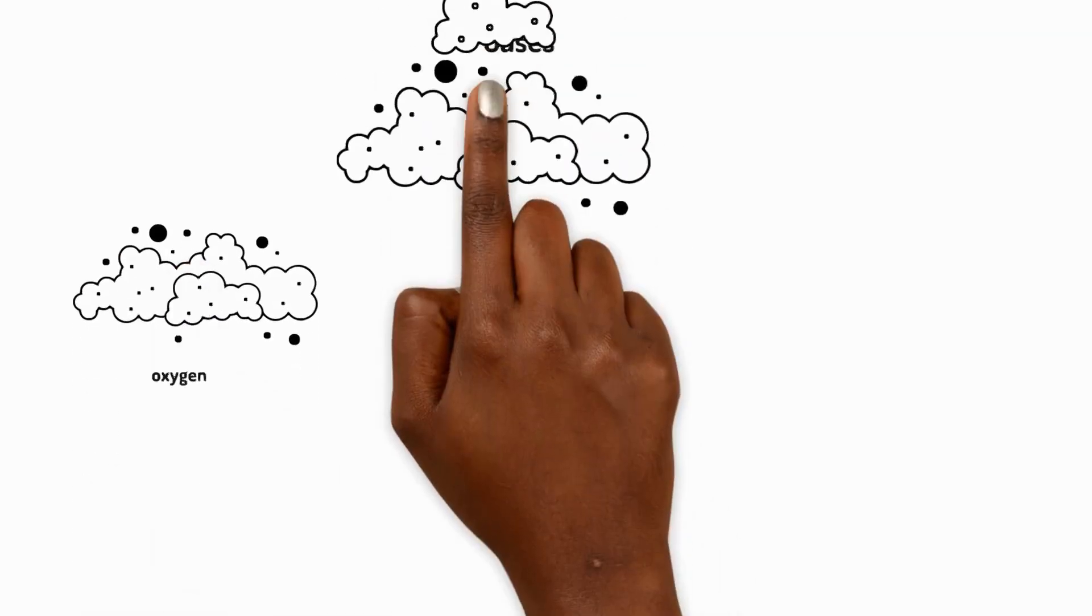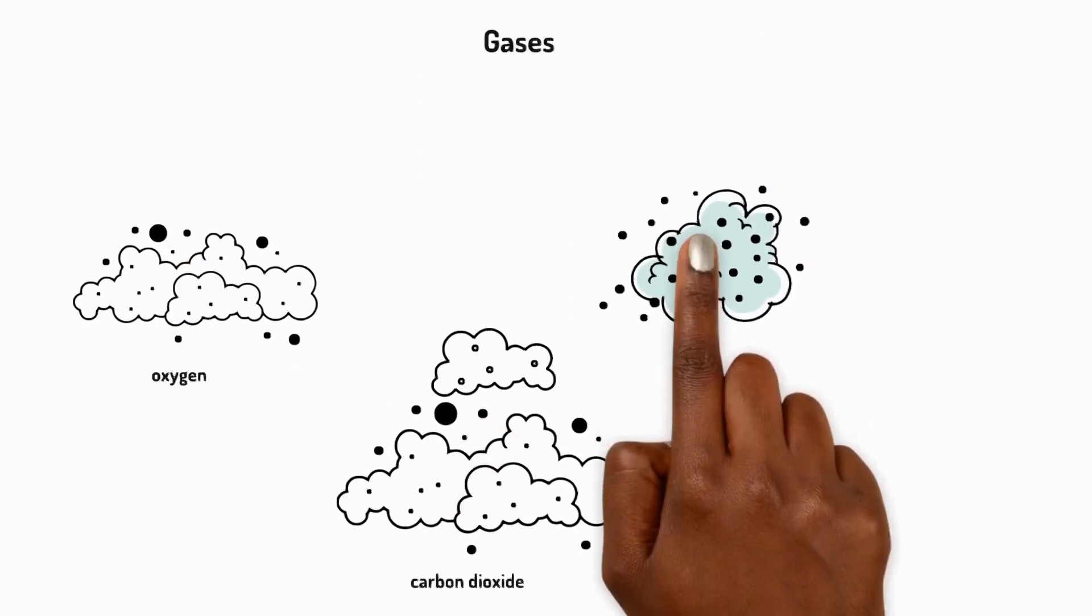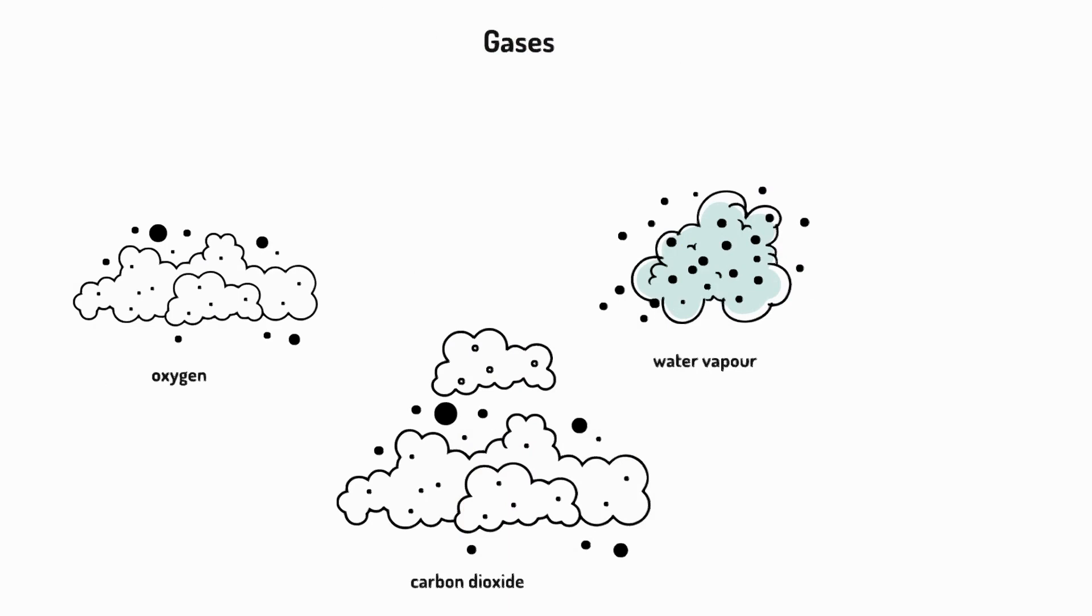Next up are gases. Some common gases are oxygen, carbon dioxide, and water vapor. The thing about gases is that many of them, like the air we breathe, are invisible.